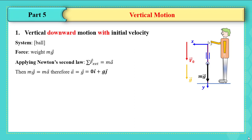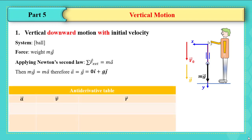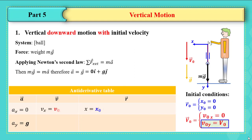We write g vector as 0î + gĵ, so aₓ = 0 and aᵧ = g. For the velocity and position vectors, we use the antiderivative table from the last video. The initial conditions are: r₀ vector = 0î + 0ĵ since the ball started from the origin, v₀ₓ = 0 since there is no motion along the x-axis, and v₀ᵧ = v₀ along the y-axis.